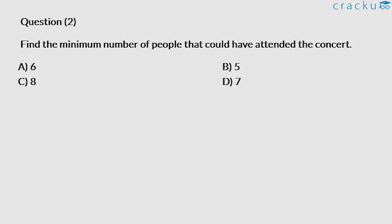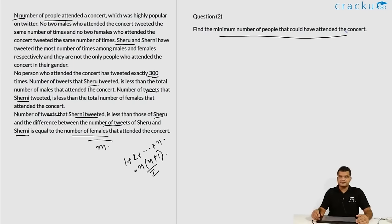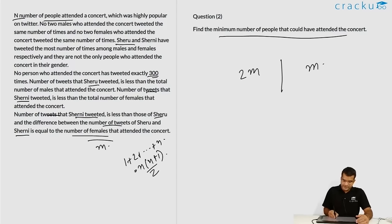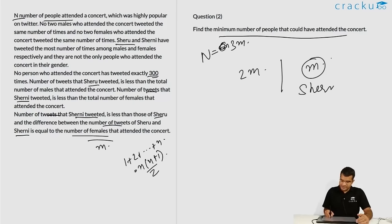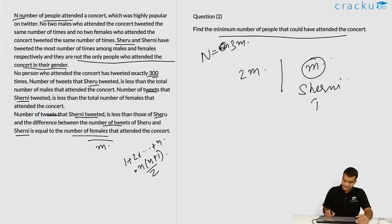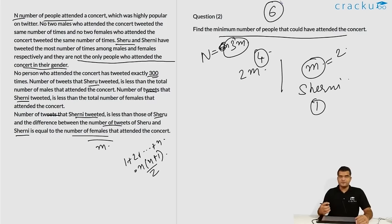Find the minimum number of people that could have attended the concert. The number of women is m and the total is 3m. Can m = 1? No, because it is given that Sheru and Sherni are not the only people of their gender at the concert, so there must be at least one other woman. Therefore the minimum value of m is 2, giving at least 4 men, and the minimum total number of people who attended is 3 × 2 = 6.